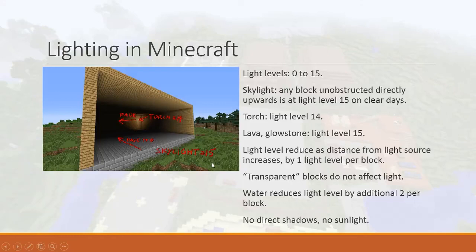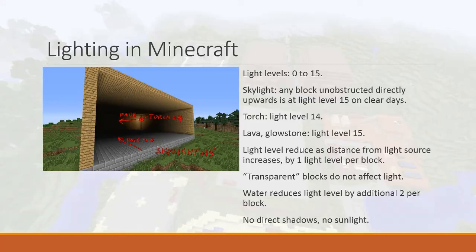To reiterate: anything directly open to the sky during the day is light level 15. Anything further from the open air fades by one light level per block until it reaches 0. Transparent blocks — like glass and fences — do not affect light. Water is not transparent; water reduces light level by 2 per block.